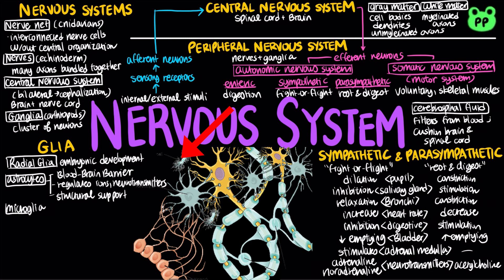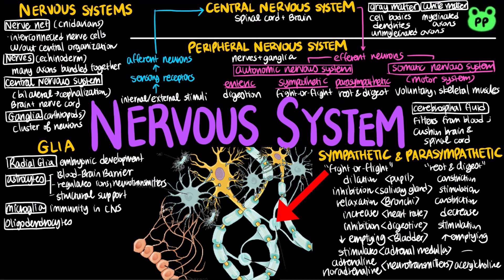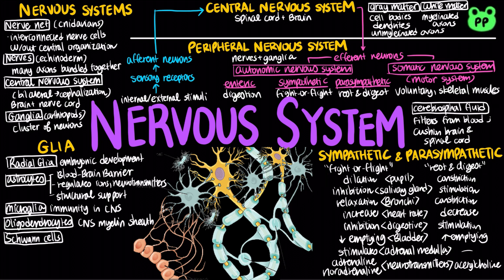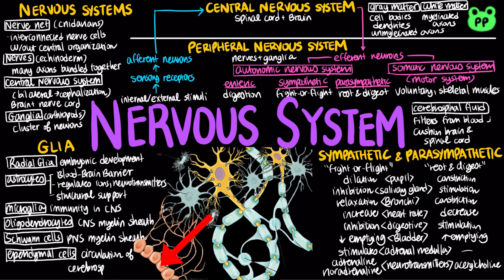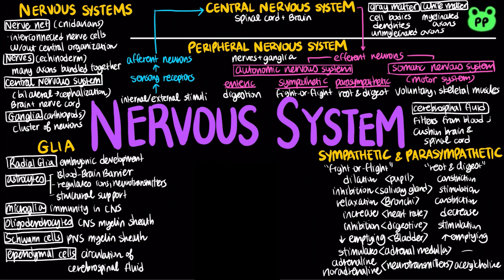Microglia protect the nervous system from microorganisms. Oligodendrocytes form the myelin sheaths around axons in the central nervous system, whereas Schwann cells form the myelin sheath of the peripheral nervous system. Lastly, ependymal cells promote circulation of the cerebrospinal fluid.